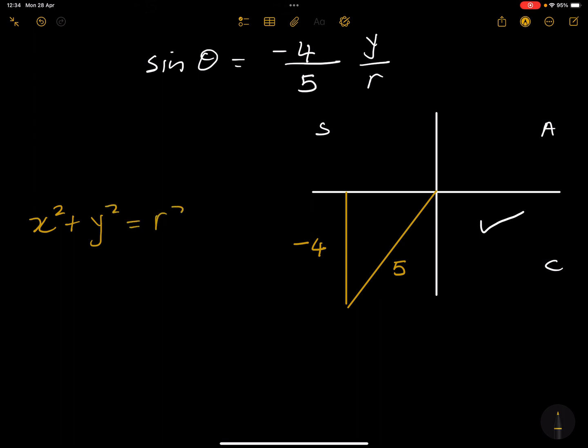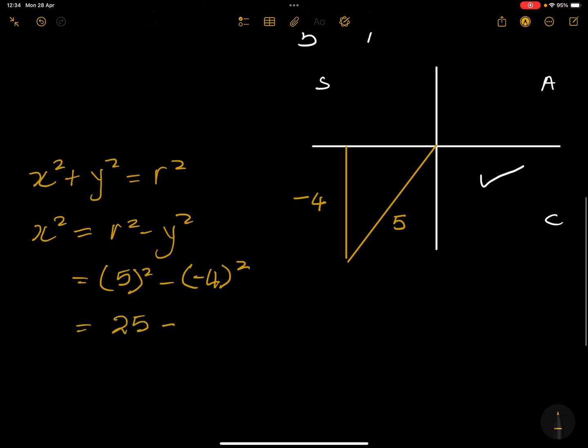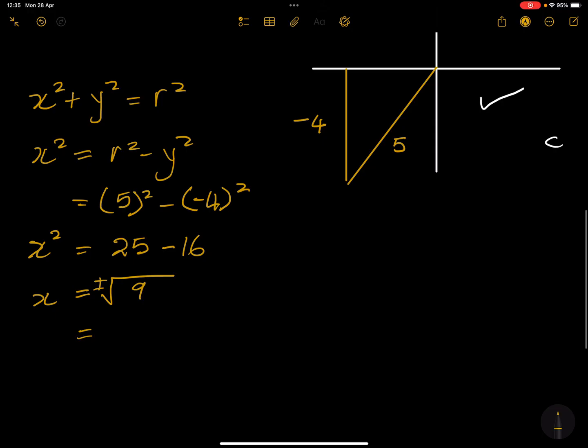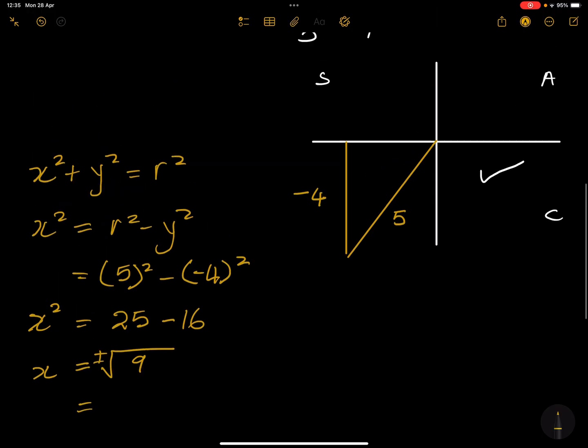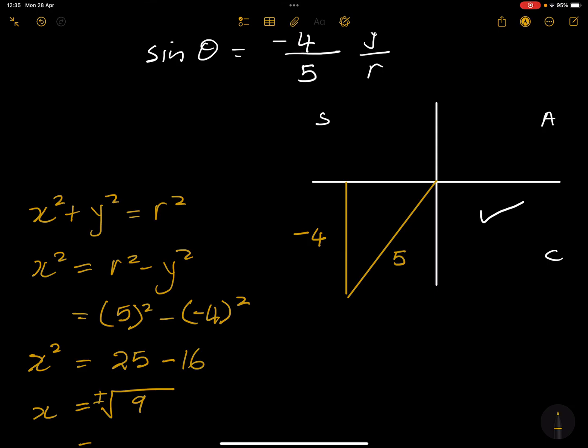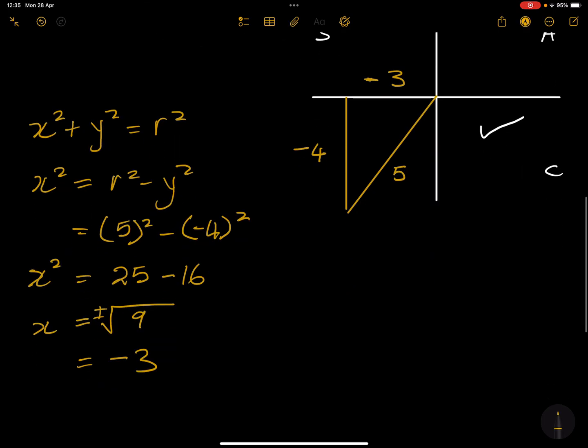We're going to use our Pythagorean theorem. x squared plus y squared is equal to r squared, but because we're looking for x, we're going to say this is r squared minus y squared. So r is 5 squared minus negative 4 all squared, which gives us 25 minus 16, and that gives us 9. We know that x would be plus minus the square root of 9, plus minus 3. However, because we're in the third quadrant, we know x is negative there, so x will be equal to negative 3.